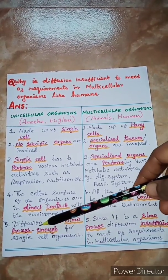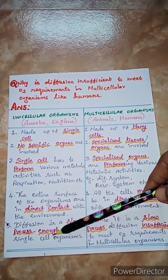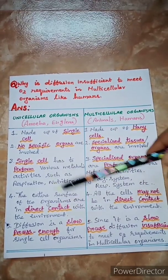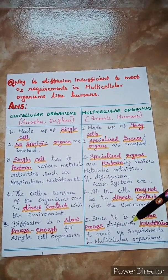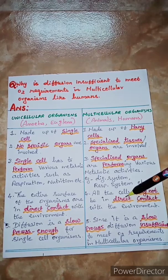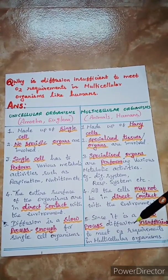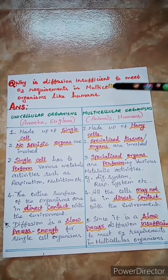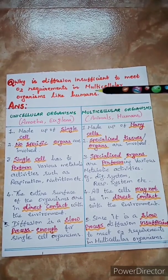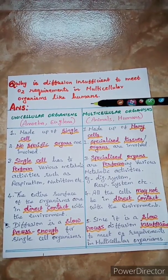And another one, diffusion is a slow process. Hence, it is enough for single cell organisms. But this slow process is not able to reach all the cells in the multicellular organism. That is why diffusion is insufficient to meet oxygen requirements in multicellular organisms like humans.